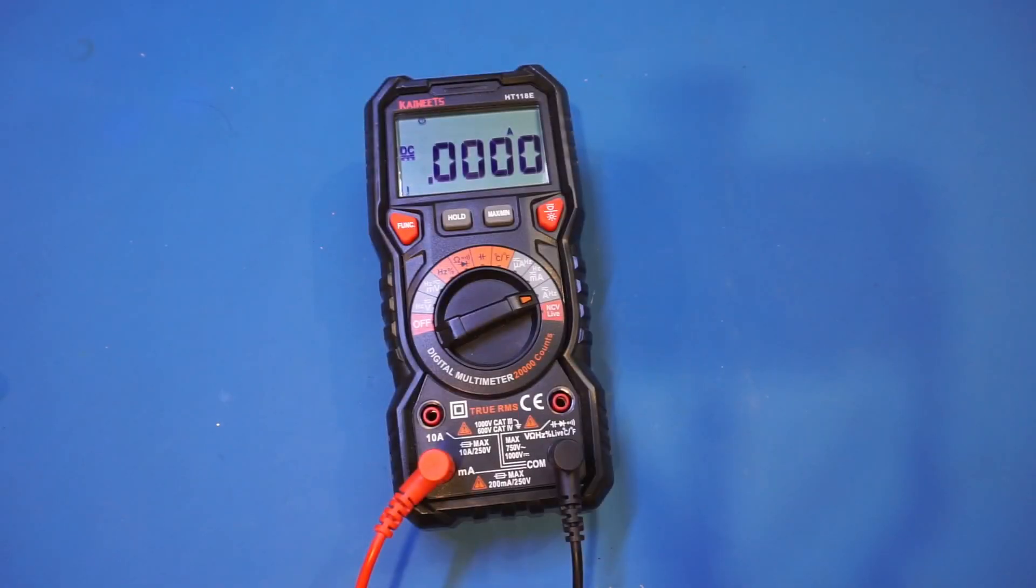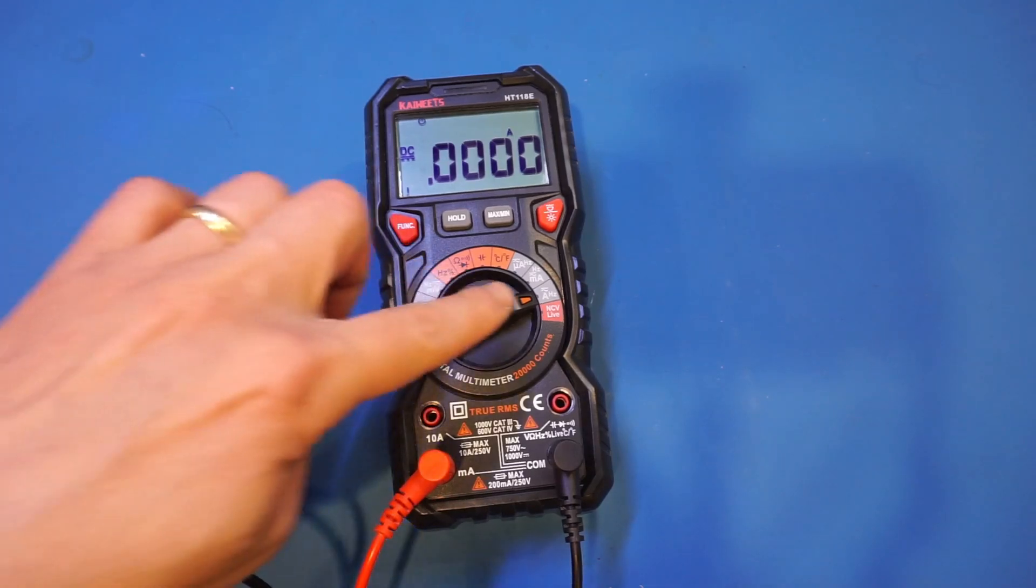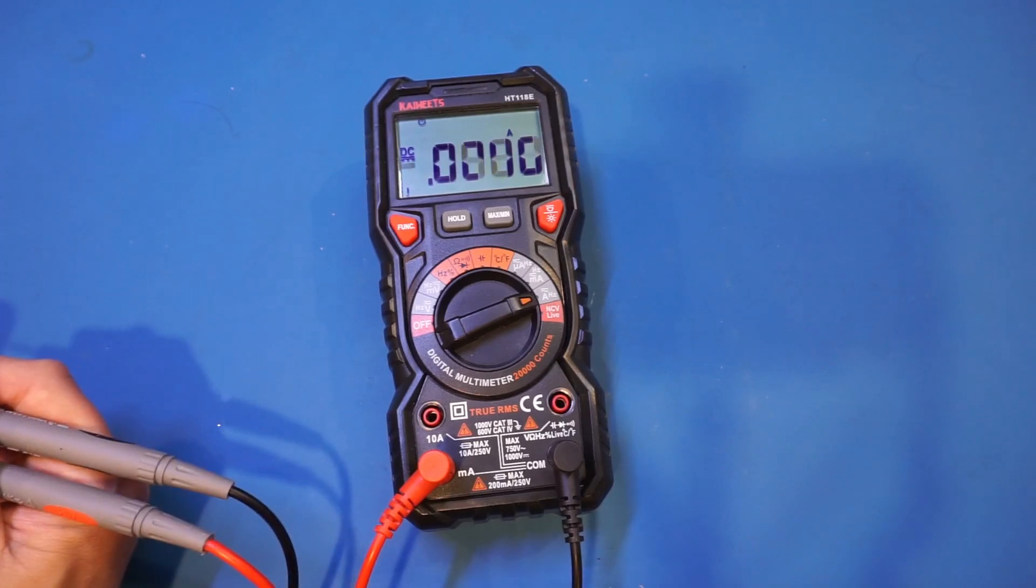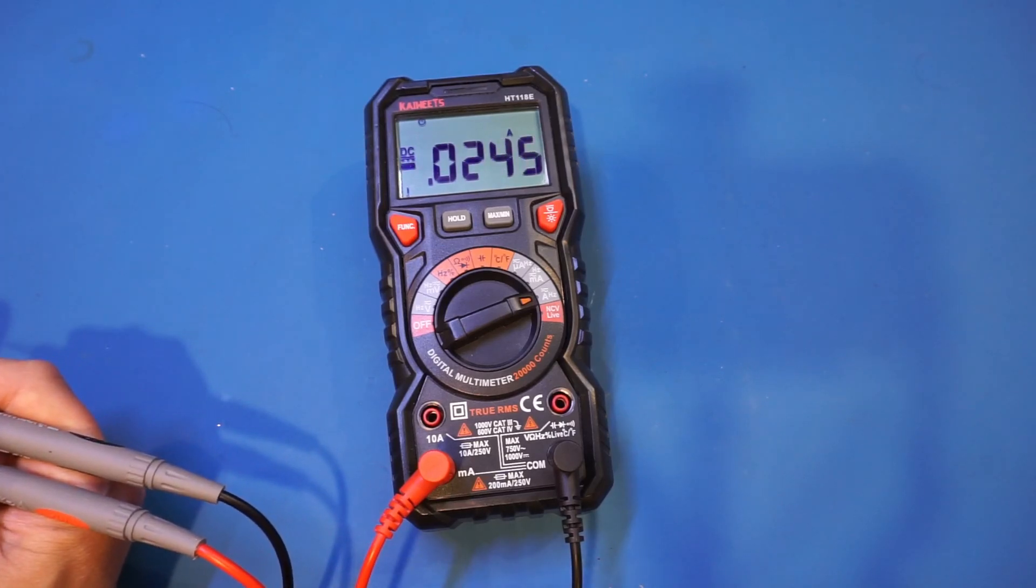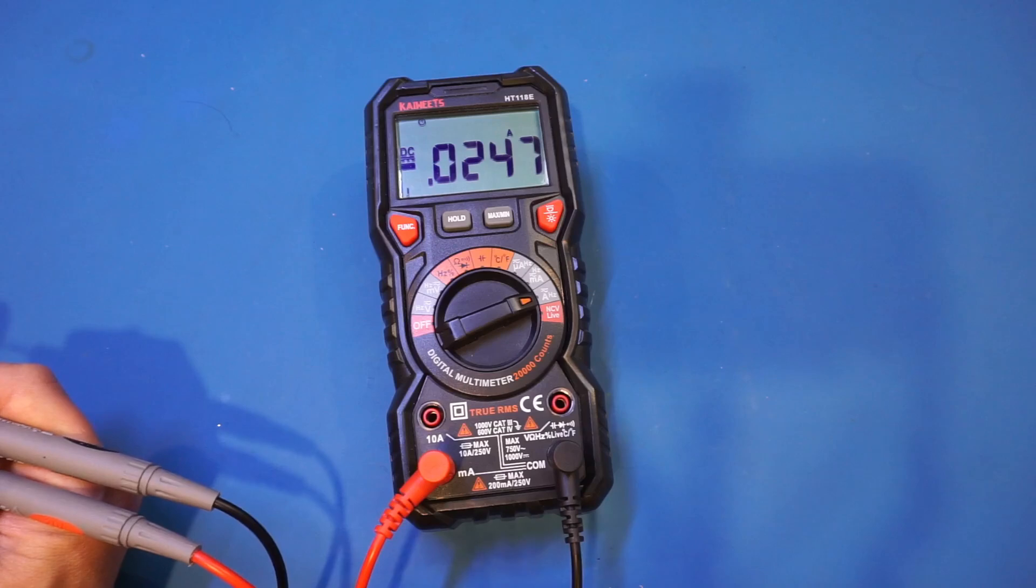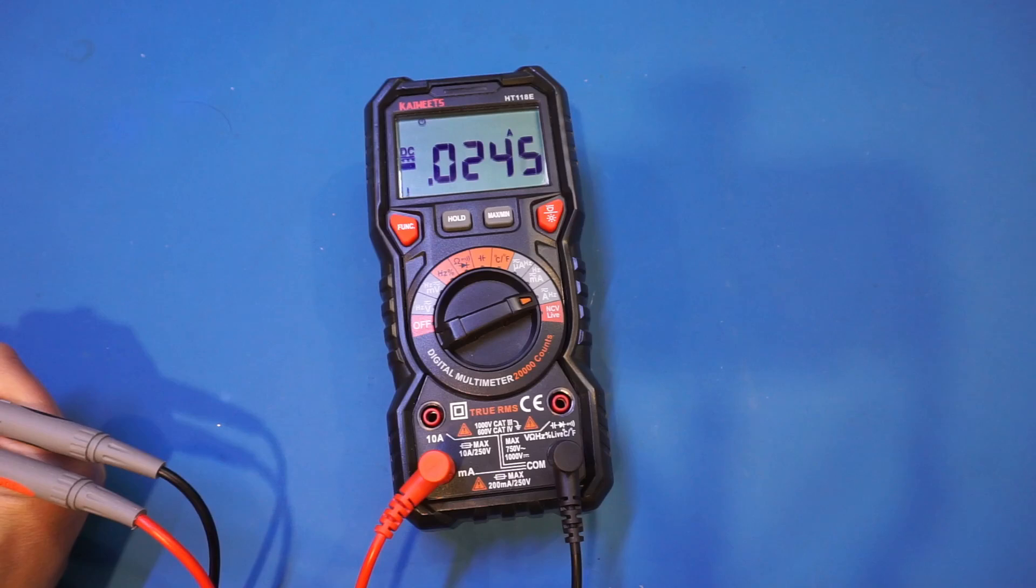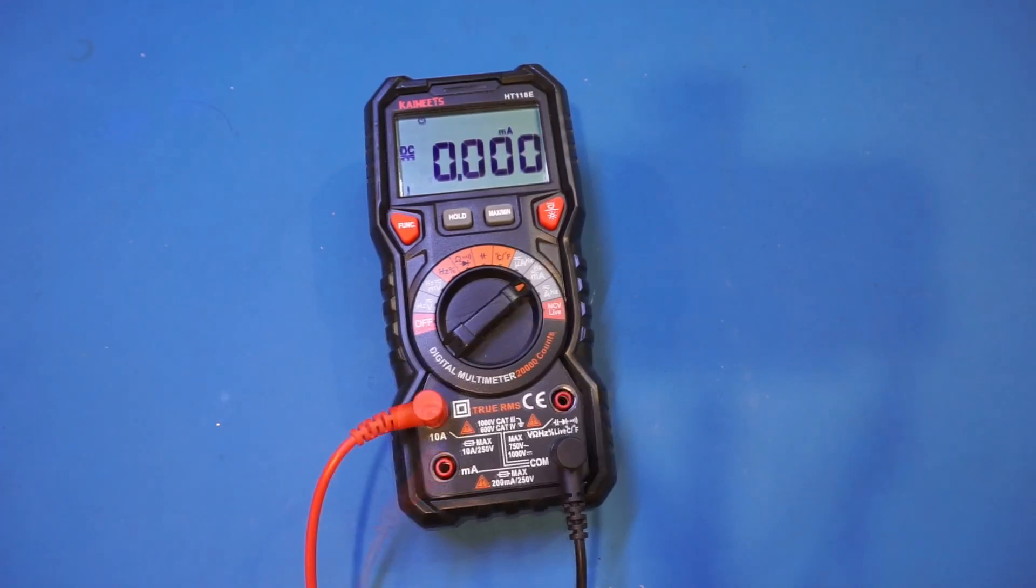Now let's take a look at some other multimeters I have accumulated over the years. Here's the HT118E. Let's take a look. Right now we're in amp measurement, but we're putting into the milliamp jack. It seems the value actually is negative, although we're measuring positive. But the value is in the ballpark, roughly in the right value here. Now we swap the input jack into the 10 amp range and we're currently measuring milliamp current. And we're definitely not getting the right reading here.